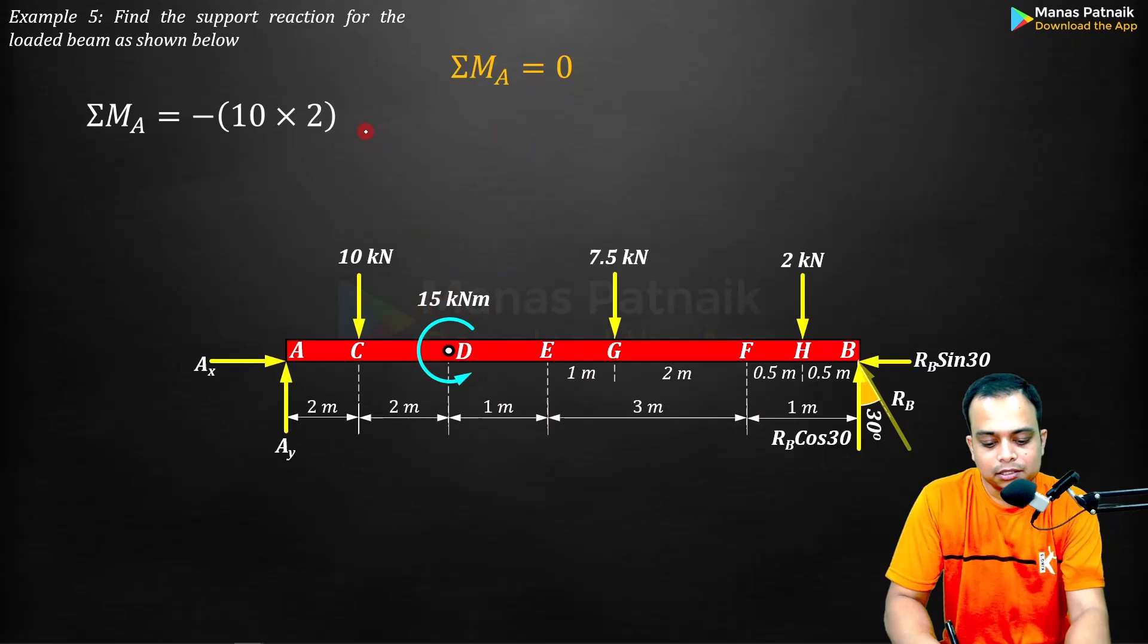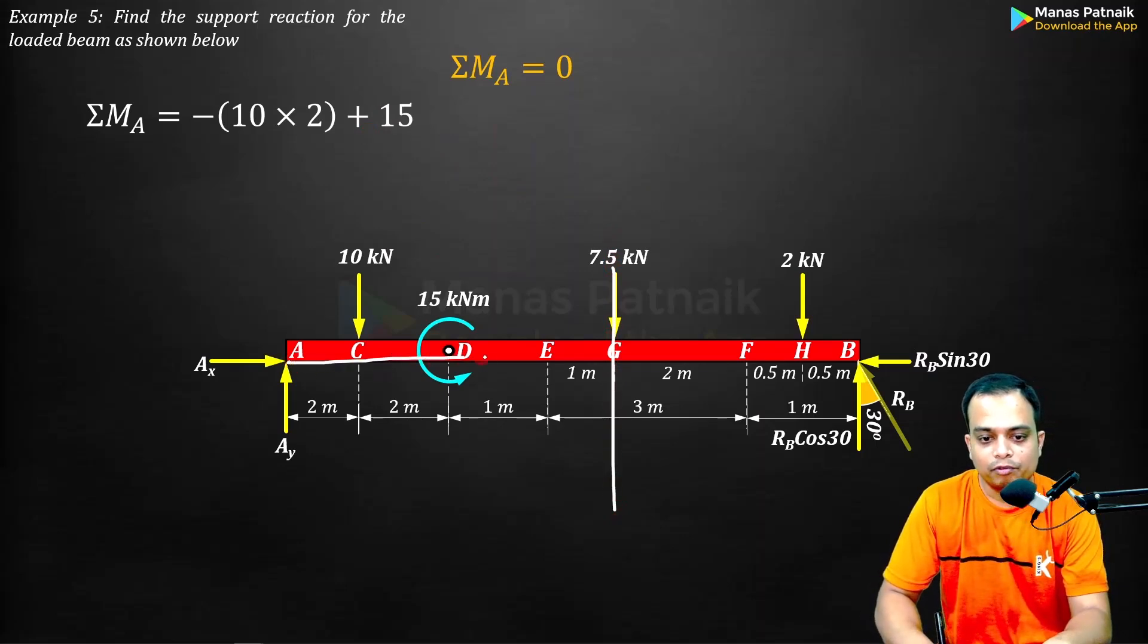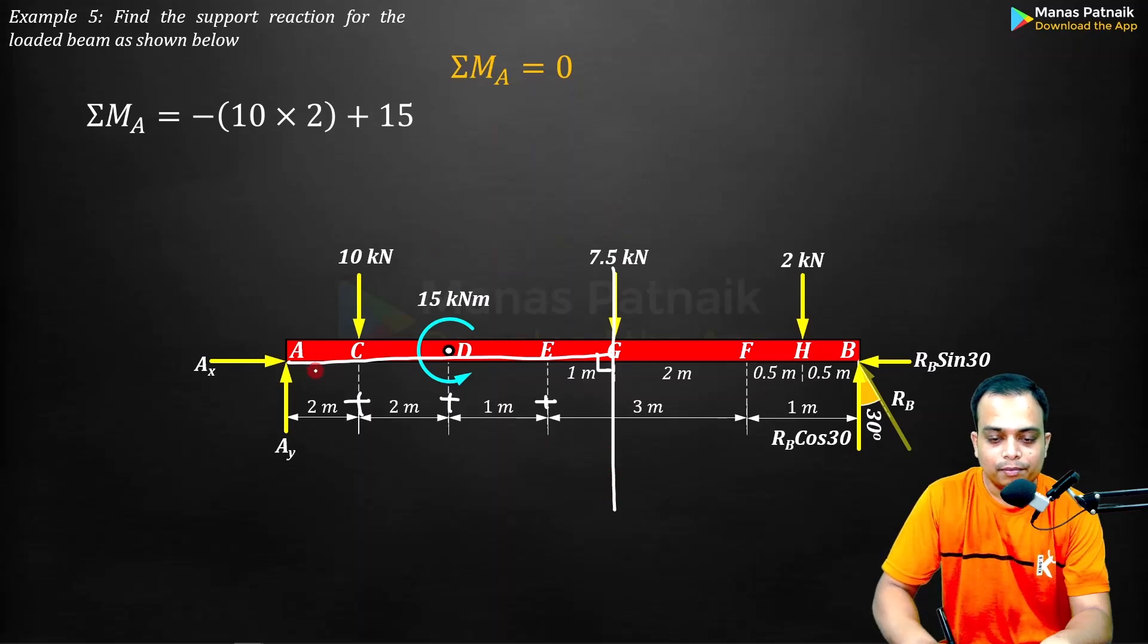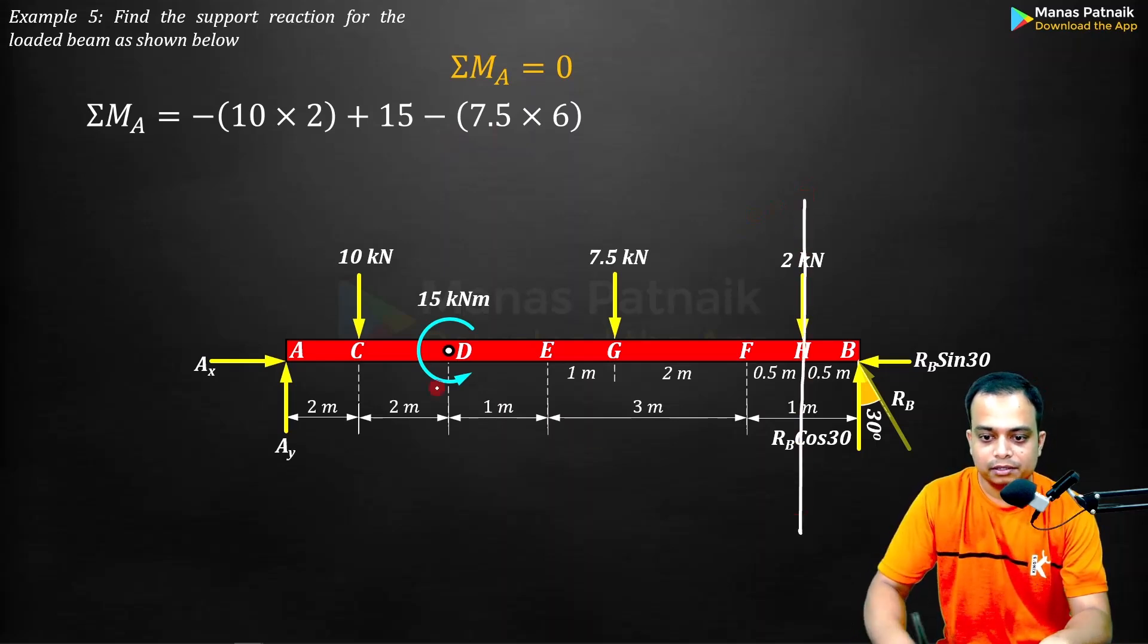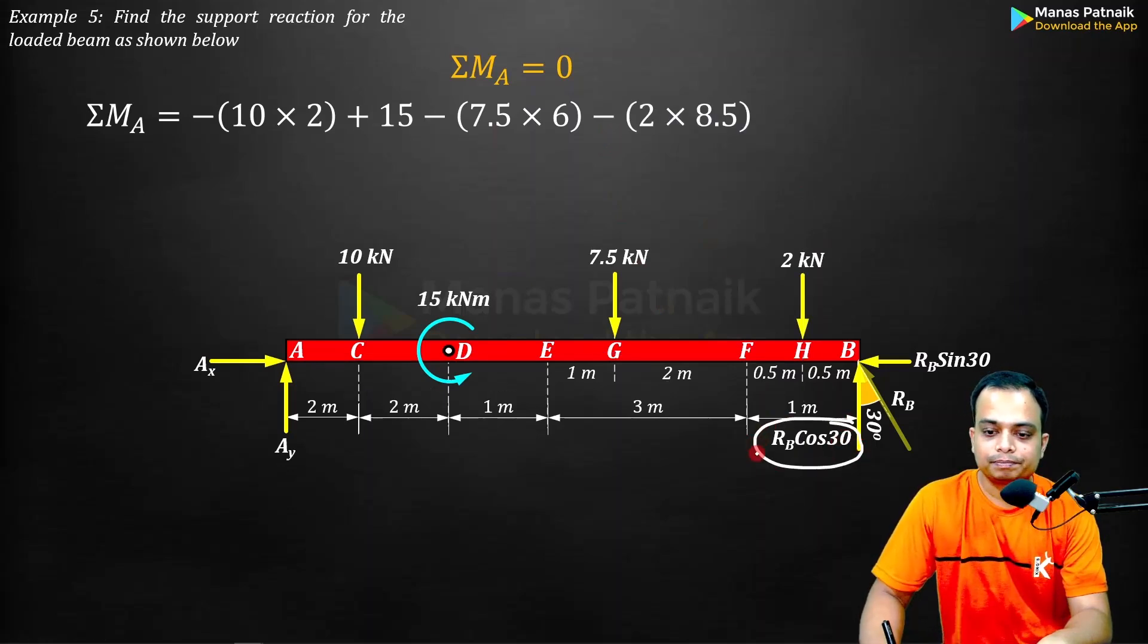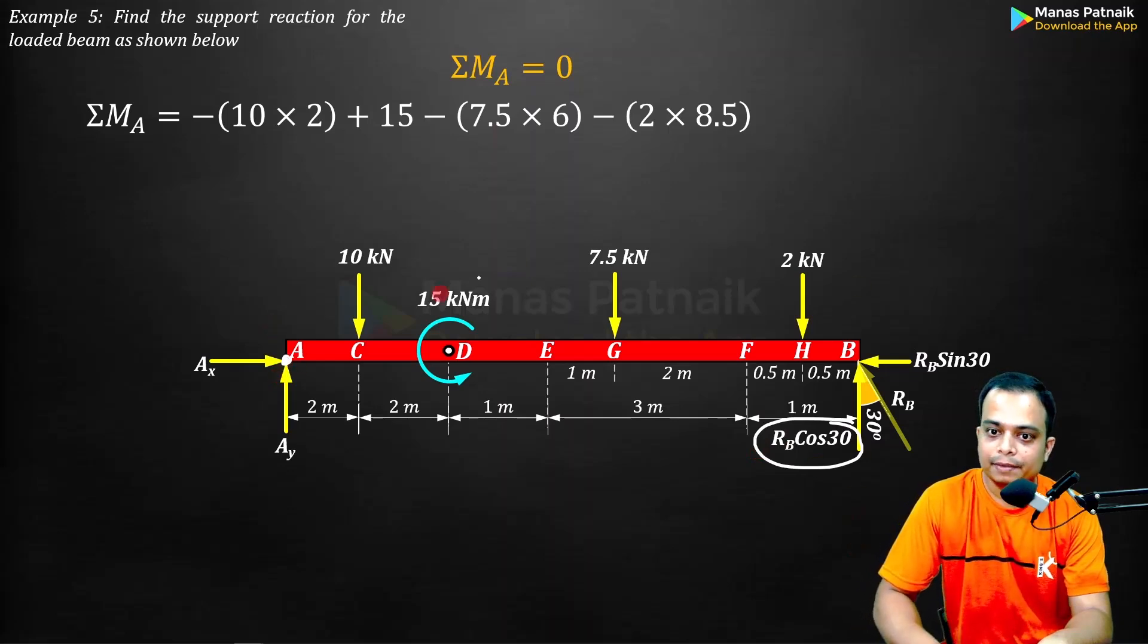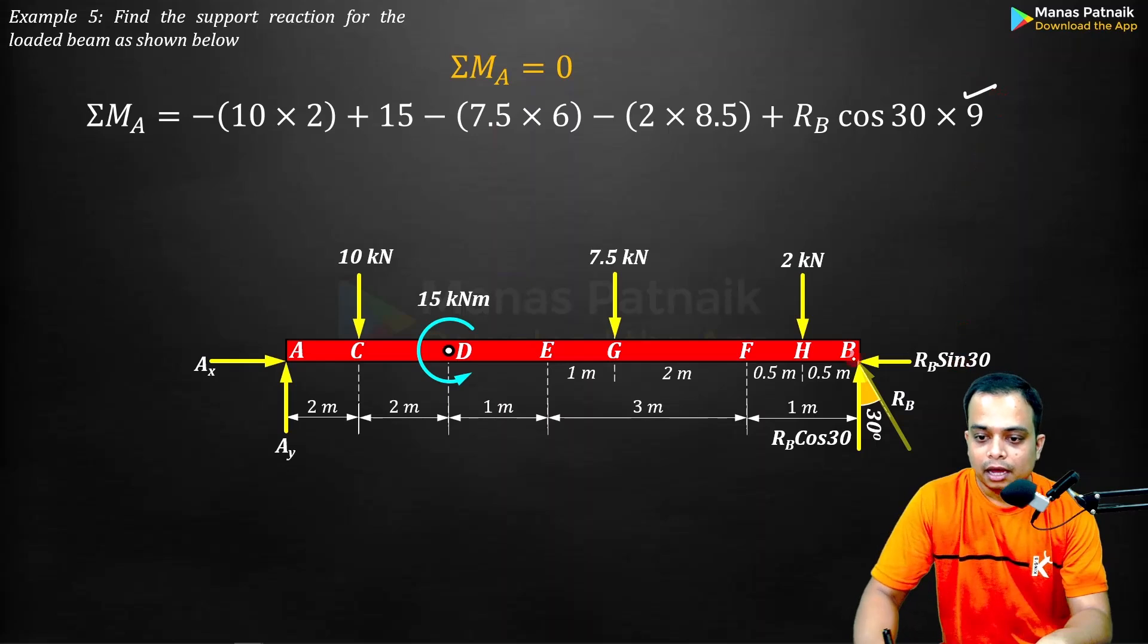Secondly, we have this fifteen kilonewton-meter, which is not a force but basically a moment of a couple, so no perpendicular distance has to be multiplied. Anti-clockwise, positive, so plus fifteen. Thirdly, you've got this 7.5. This is the line of action of the force. Perpendicular drop from A, if you watch: two plus two is four, plus one is five, plus one is six. This is 7.5 multiplied by six, clockwise moment, that's why negative. This two kilonewton, the perpendicular drop is 8.5, so two multiplied by 8.5, clockwise, negative sign.